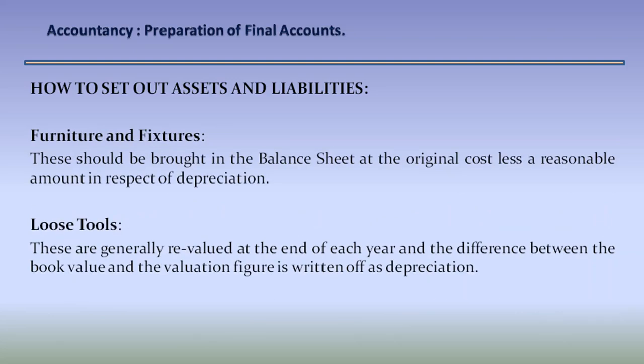Furniture and fixtures: these should be brought in the balance sheet at the original cost less a reasonable amount in respect of depreciation. Loose tools: these are generally re-valued at the end of each year, and the difference between the book value and the valuation figure is written off as depreciation.